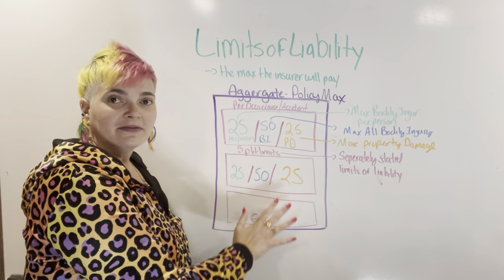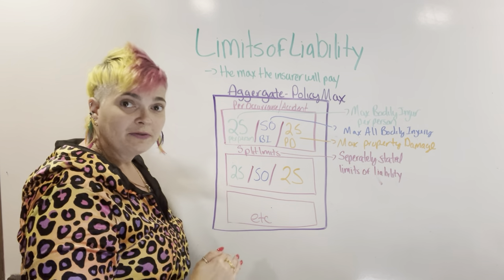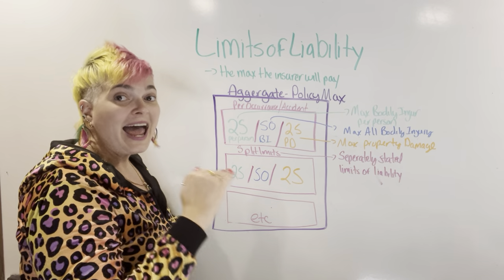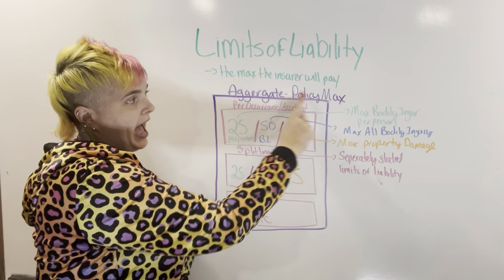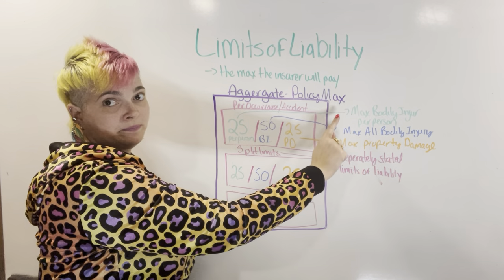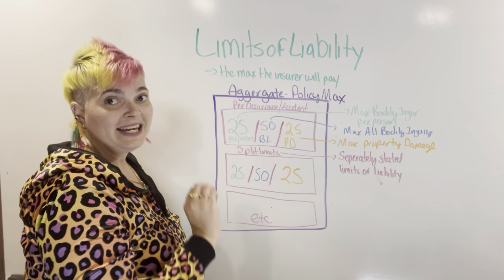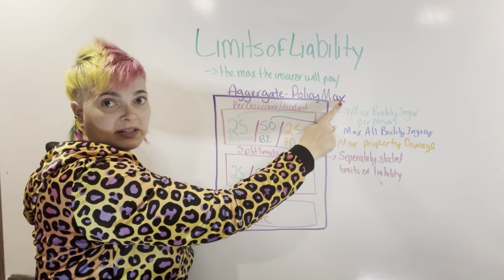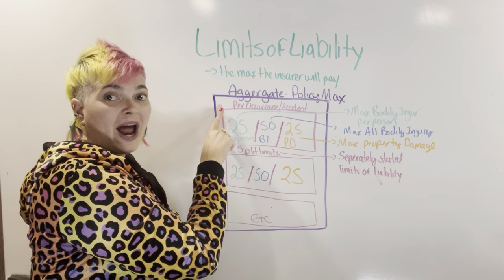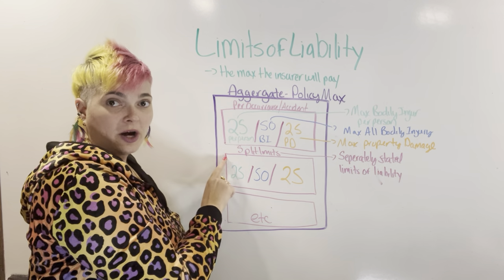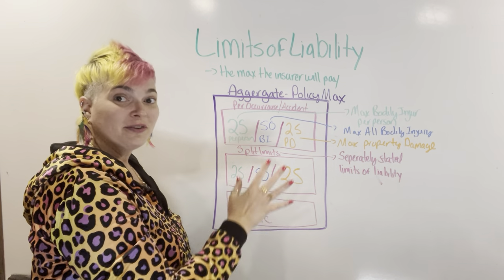Think of the aggregate like a 24-hour day. Each accident would be an hour, and the limits within that accident would be like the minutes. So if the aggregate represented a 24-hour day — your whole policy — the aggregate would be 24 hours total. Each per occurrence would represent one hour, and then we break it up into minutes even further.